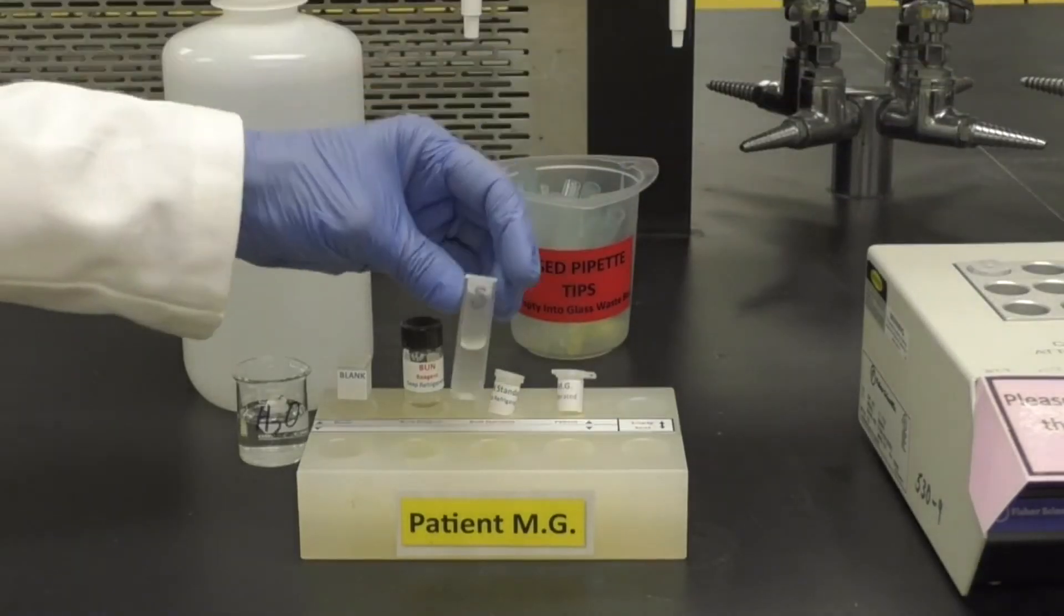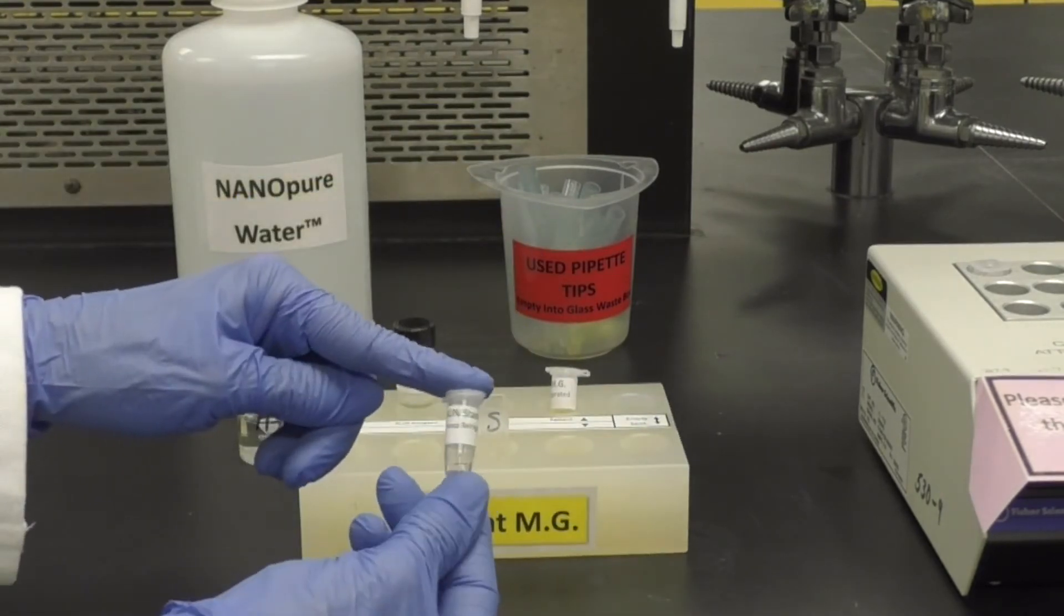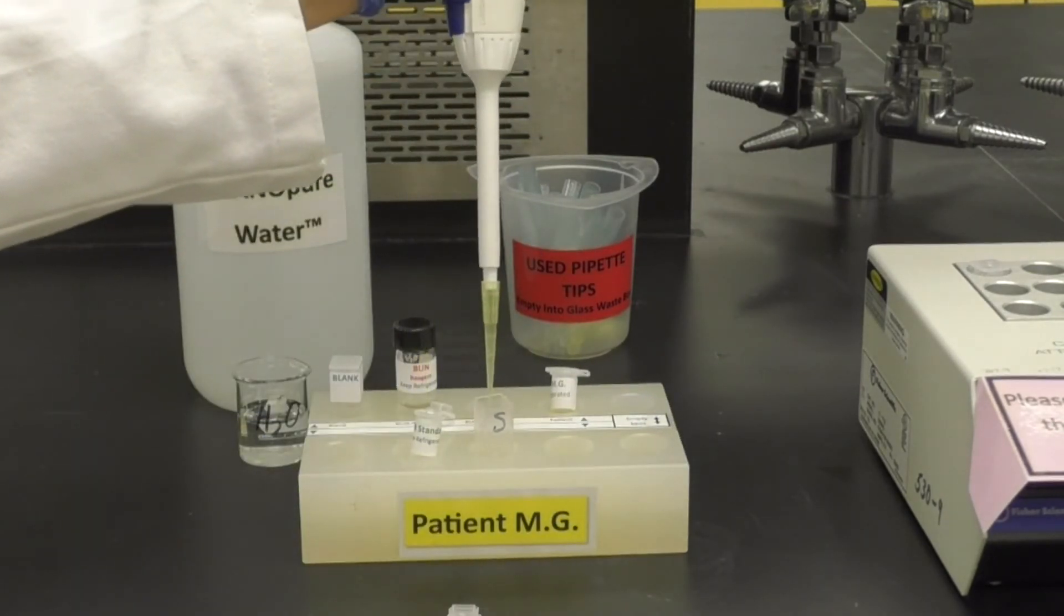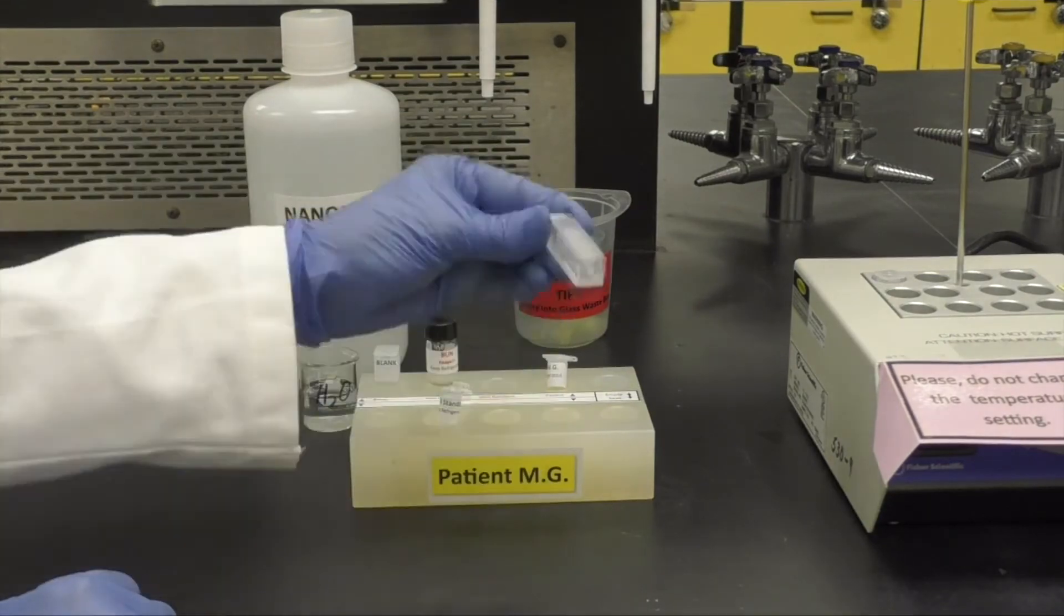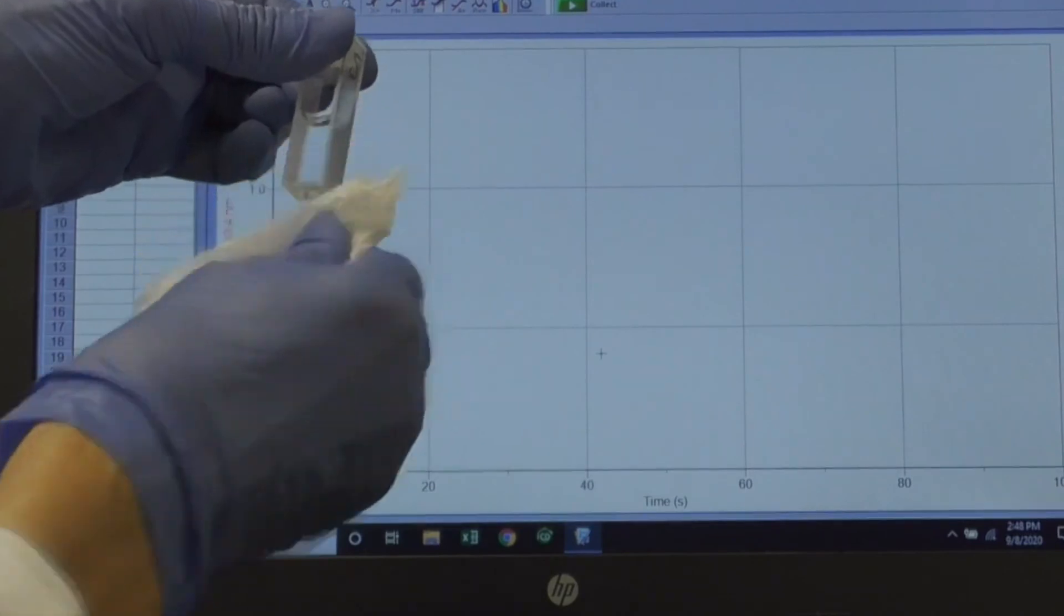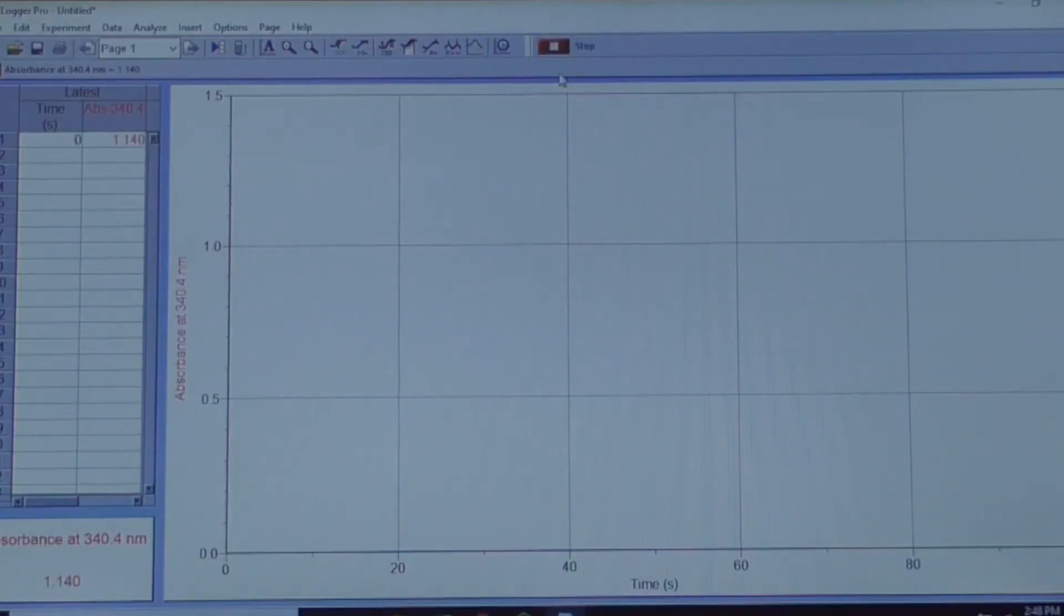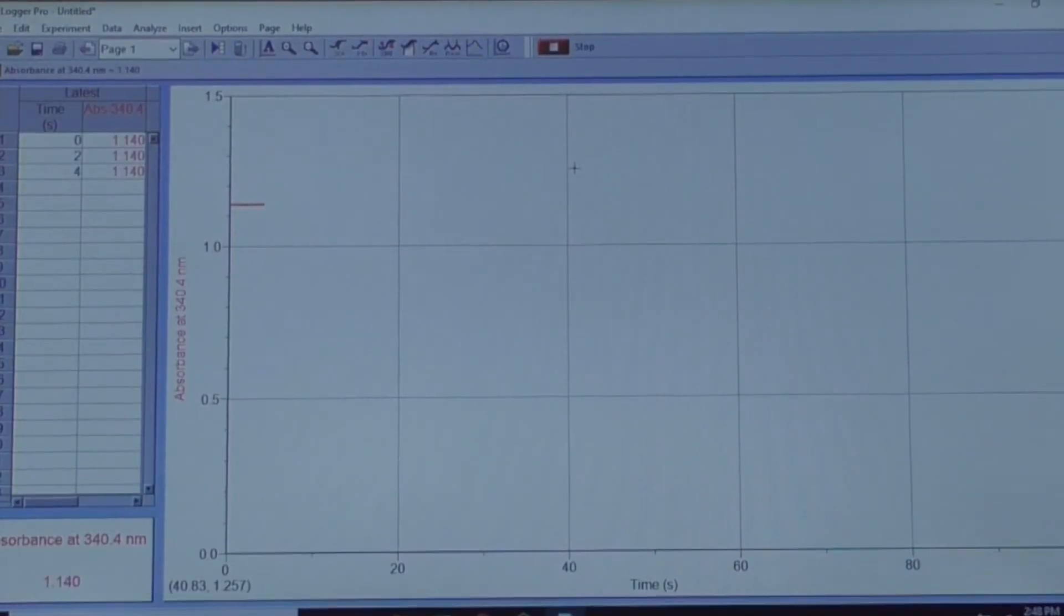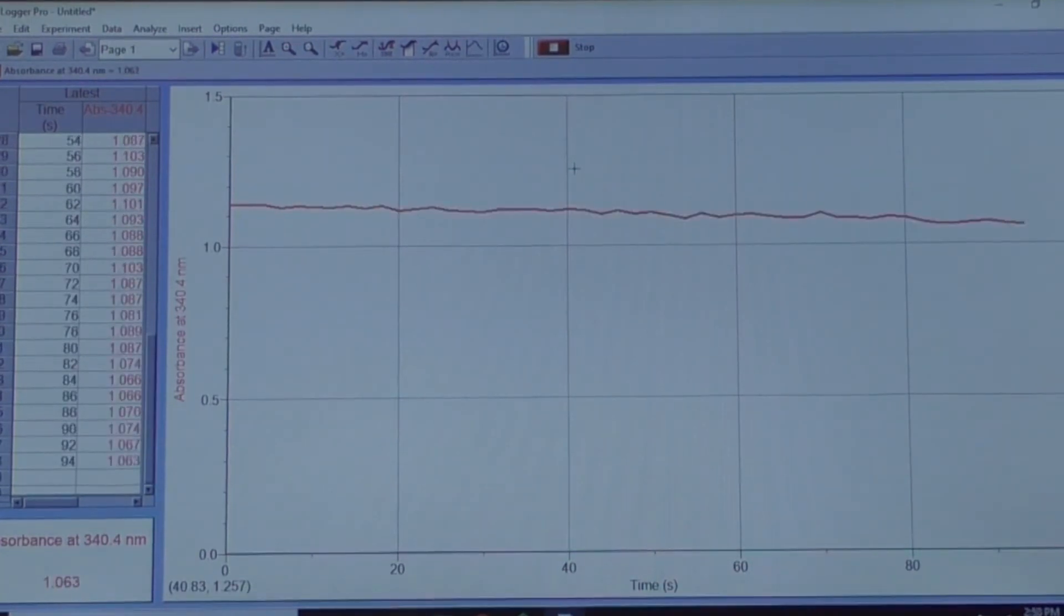When 5 minutes is up, remove the cap and add 20 microliters of the BUN standard, rock to mix, and quickly wipe the cuvette, place it in the spectrometer with a clear side facing forward, and click Collect. Do not click Stop. The run will end automatically when the 100 seconds has elapsed. Based on the settings, you will see data appear every 2 seconds.